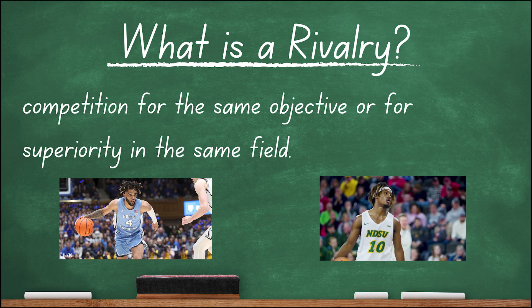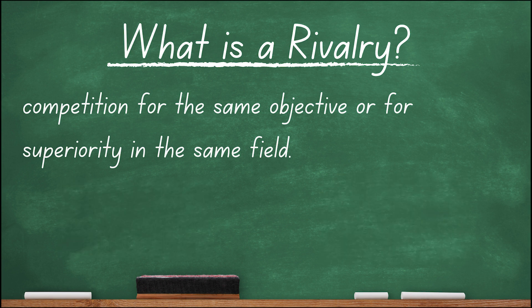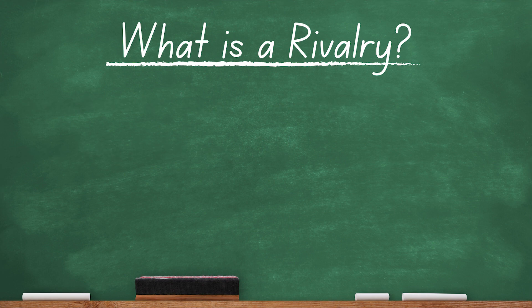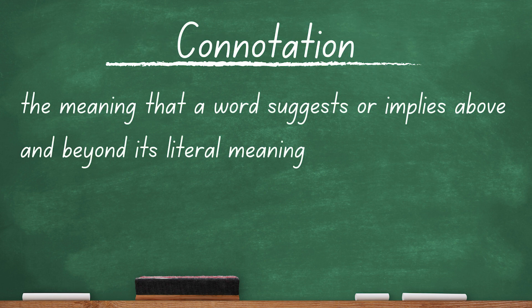North Carolina would be rivals the same way with North Dakota State as they would be with Duke — they're both competing to win basketball games, the same objective, and they're both looking for superiority in the field of basketball. But we know that simply isn't the case. North Dakota State is not rivals with North Carolina — no offense to Carson Wentz. So how do we define this word, rivalry, as it relates to American sports? We need to look at the connotation of the word — the meaning that a word suggests or implies above and beyond its literal meaning.